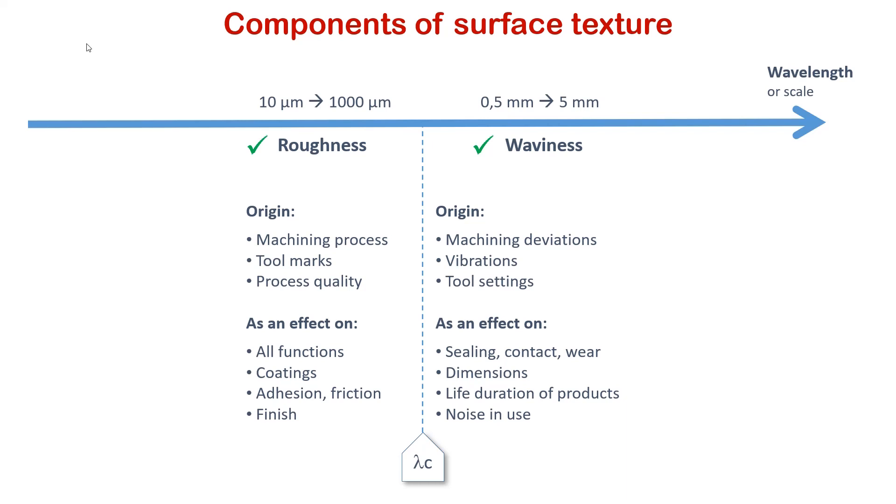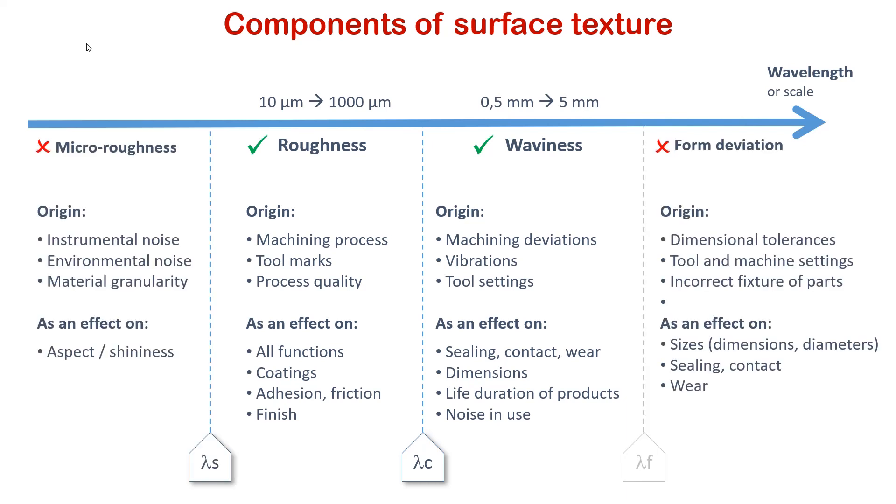Waviness is important especially when surfaces are in contact with each other, for clamping functions, sealing or sliding. Micro roughness contains the smallest wavelengths. It comes mostly from instrumental or environmental noise. In most applications this micro roughness is removed by a low pass filtering.